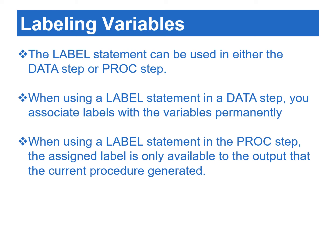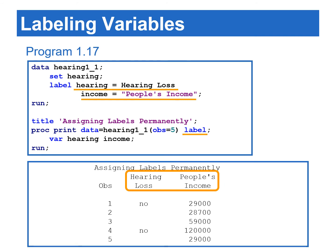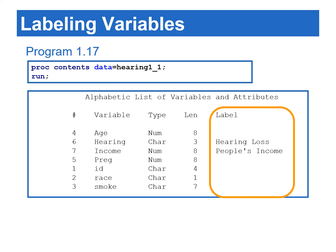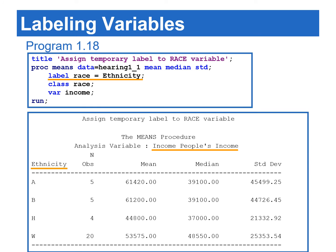The LABEL statement in the proc step does not add permanent labels to the input data set. In Program 1.17, the variables hearing and income are assigned permanent labels in the newly generated data set. If we want to see variable labels in the output from the print procedure, we need to use the LABEL option in the PROC PRINT statement. Based on the partial output from PROC CONTENTS from Program 1.17, we can see that the hearing and income variables have permanent labels listed under the label attribute column. Program 1.18 calculates mean, median, and standard deviation for the income variable by each category of ethnicity. In PROC MEANS, the LABEL statement is used to assign the race variable a temporary label, 'ethnicity'. Notice that the label attribute for the income variable is listed in the output, because income was assigned a permanent label in the data step previously.